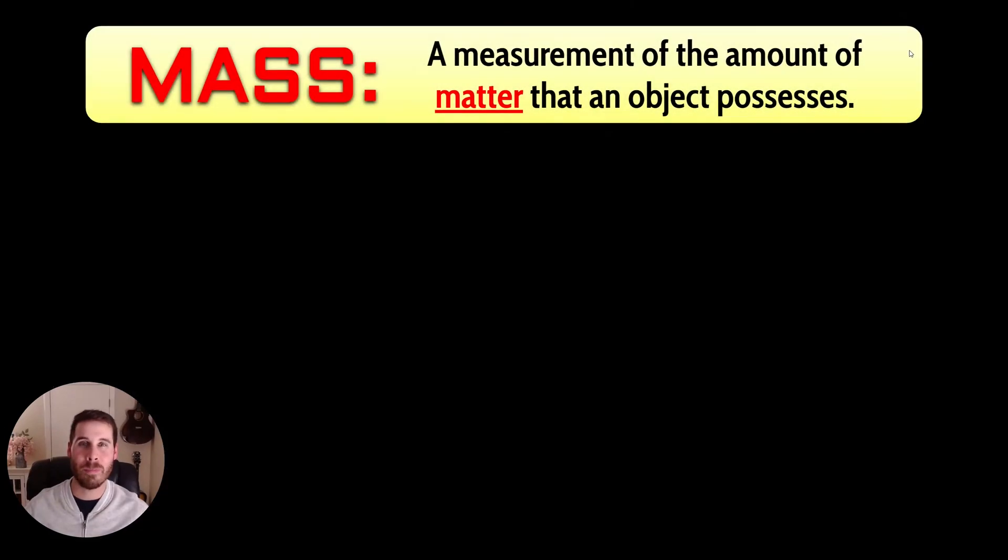First, what's mass? Mass can be defined as a measurement of the amount of matter that an object possesses. So if you took an object and you looked at all the atoms that make it up, and you counted up all the protons, neutrons, and electrons that make up the atoms that make up that object, what you would be adding up and totaling is the mass of the object. That's the amount of stuff that's in it.